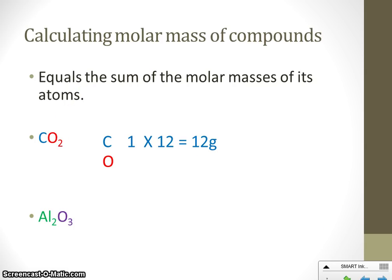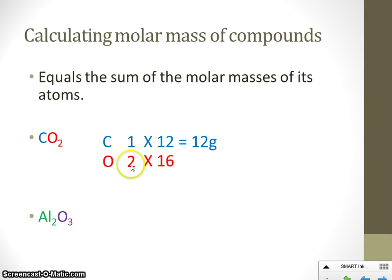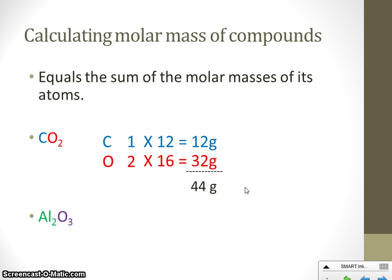So carbon contributes 12 grams and oxygen contributes 32 grams to the CO₂ molecule. To find the mass of the whole thing, we just add them together: 12 plus 32 gives a total of 44 grams. So a CO₂ molecule weighs 44 grams for every mole you have.